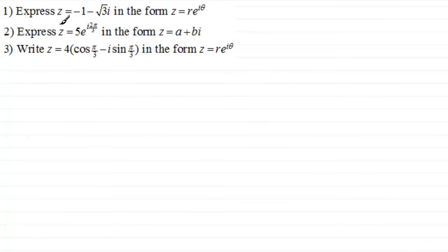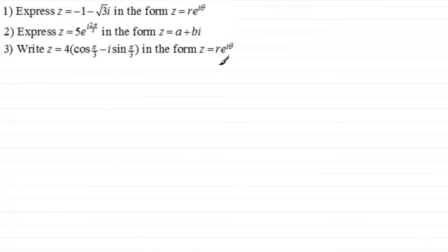Number two here — z equals 5e^(i · 2π/3) — we've got to express it in the form z equals a plus bi. Have a go at these, especially number three. Pause the video and come back when ready, or fast forward to any of these solutions to see my worked solution.